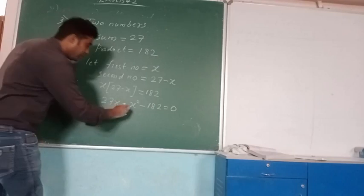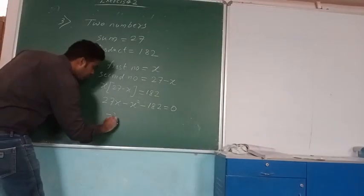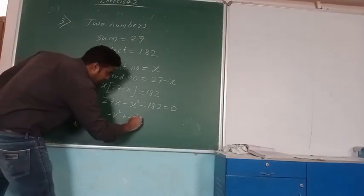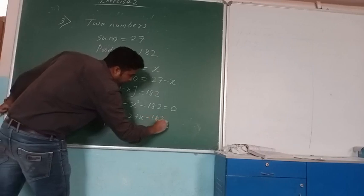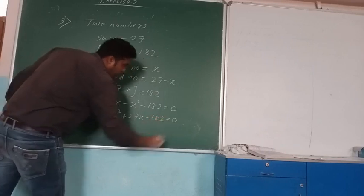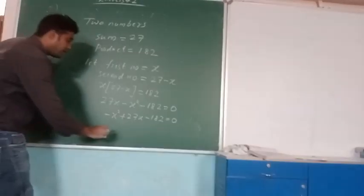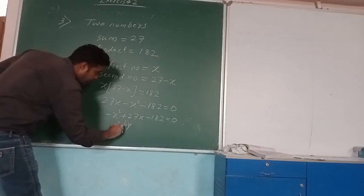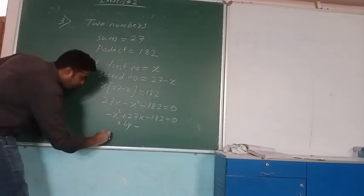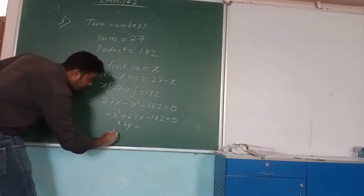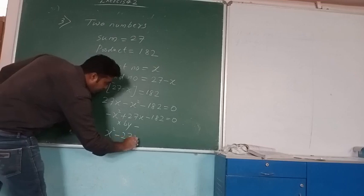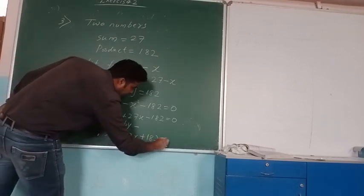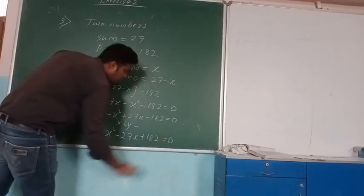Arrange in proper form: minus x squared plus 27x minus 180 equals 0. Multiplying each term by minus one, it becomes x squared minus 27x plus 180 equals 0.